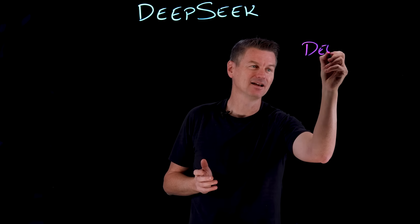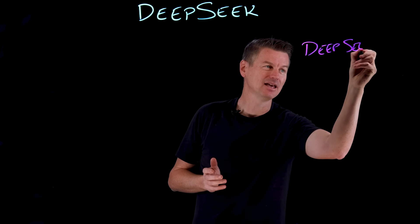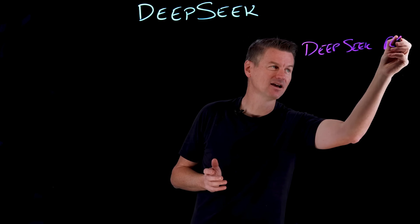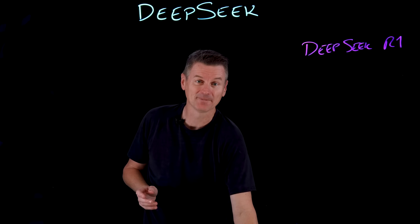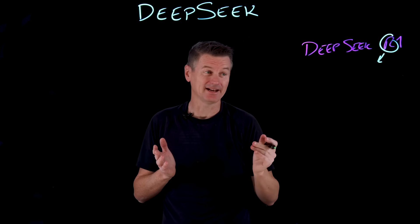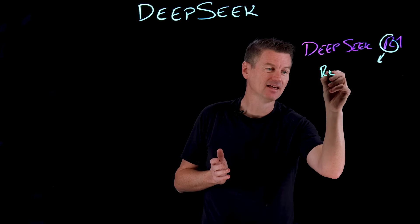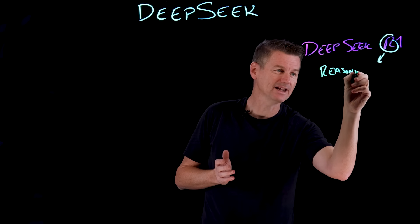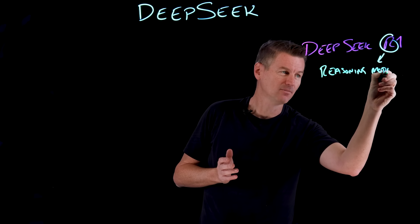Now the specific model that's really making a splash from DeepSeek is called DeepSeek R1. And the R here, that implies reasoning because this is a reasoning model.